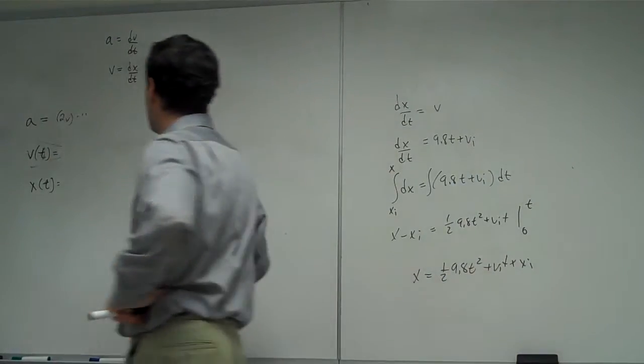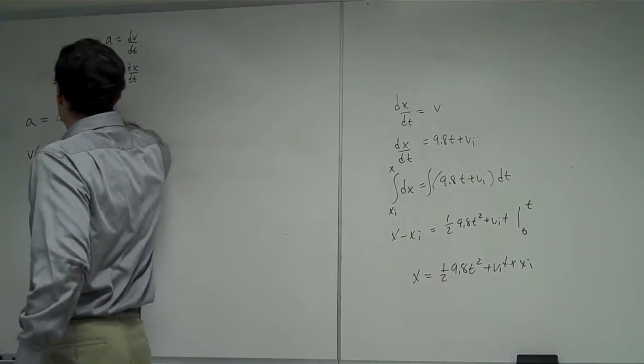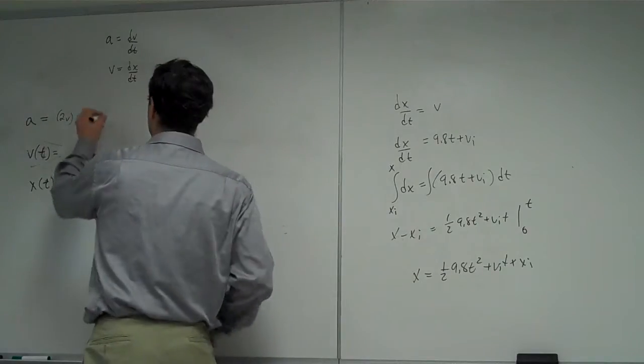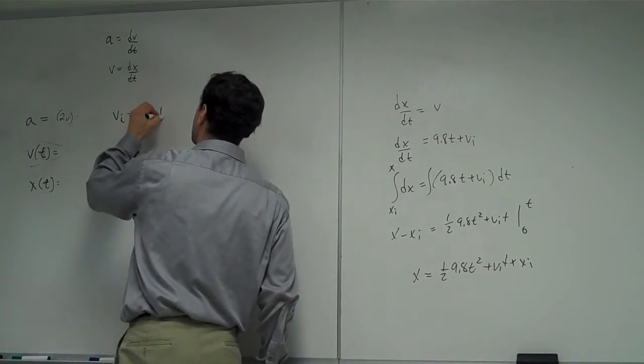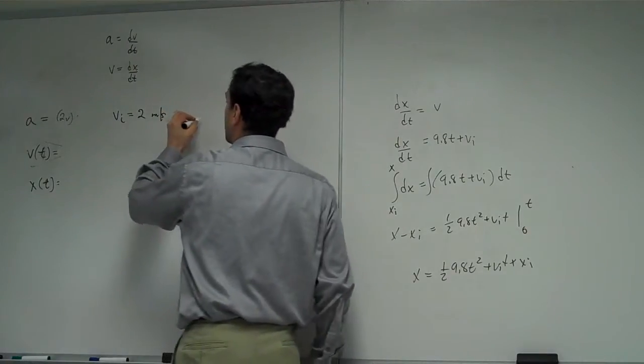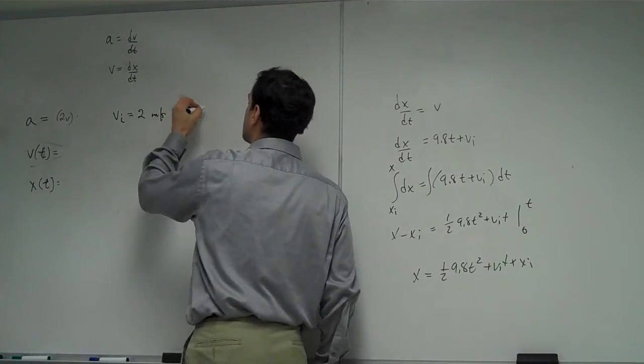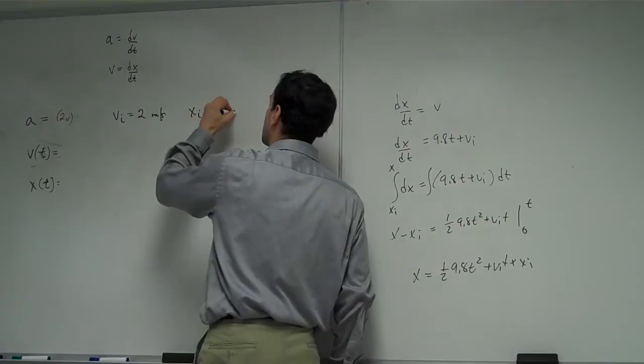Two times the velocity. Let's get some initial conditions here. Let's say the velocity initial is equal to 2 meters per second, and the initial position is equal to 3 meters.